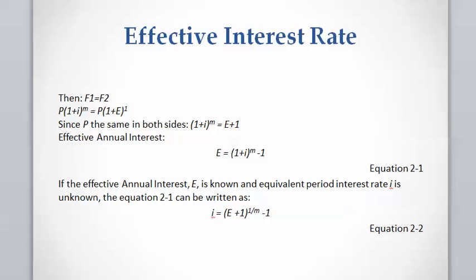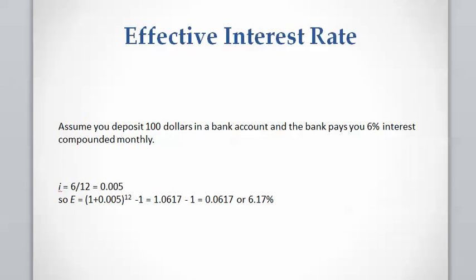Going back to the previous example: we deposited $100 in a bank account with 6% interest compounded monthly. To calculate the effective interest rate, we first calculate the period interest rate, then apply the equation we just derived. The effective interest rate comes out to 6.17%, which means applying 6.17% per year gives exactly the same future value as applying 6% compounded monthly.